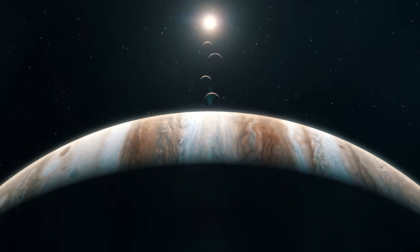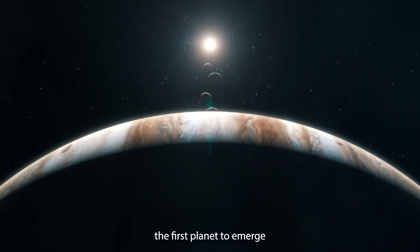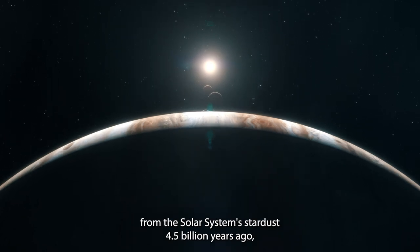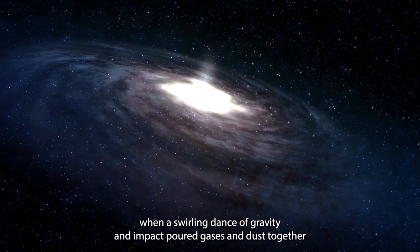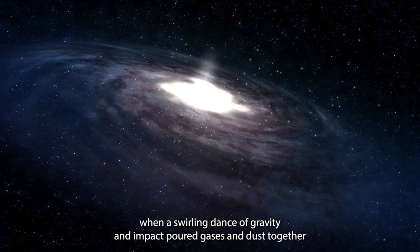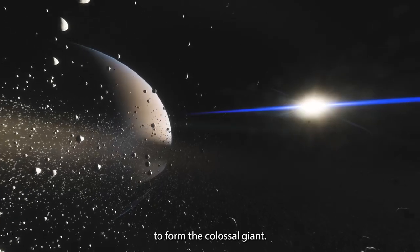Jupiter, the first planet to emerge from the solar system's stardust 4.5 billion years ago when a swirling dance of gravity and impact pulled gases and dust together to form the colossal giant.